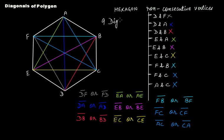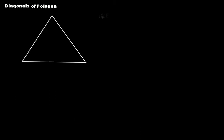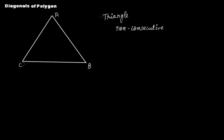Now consider a triangle. Can you tell me the non-consecutive vertices in any triangle? If you name them a, b, c — in a triangle you are not going to have any non-consecutive vertices. We don't have any non-consecutive vertices, and that is why we don't have any diagonals. The triangle does not contain any diagonals.